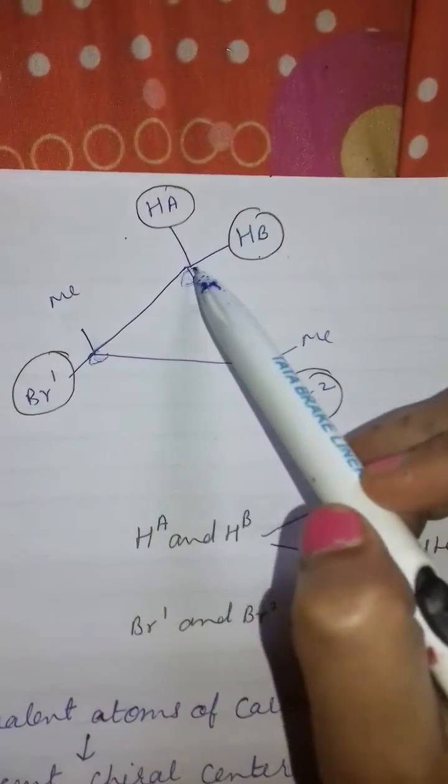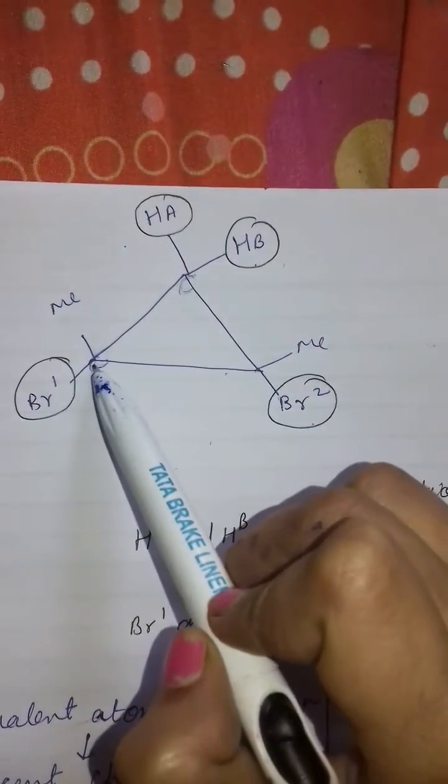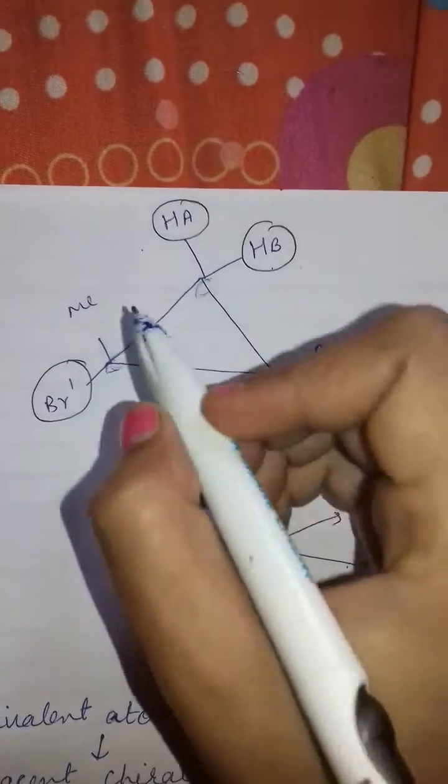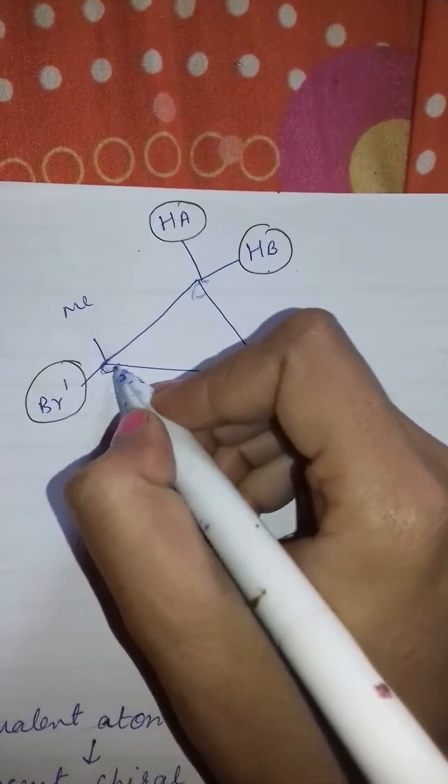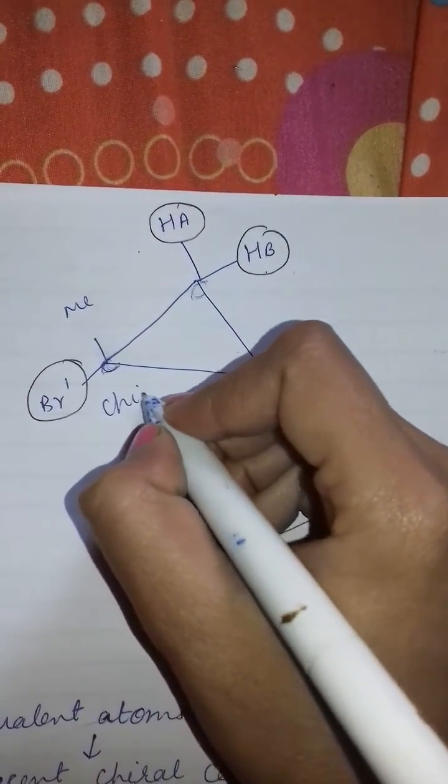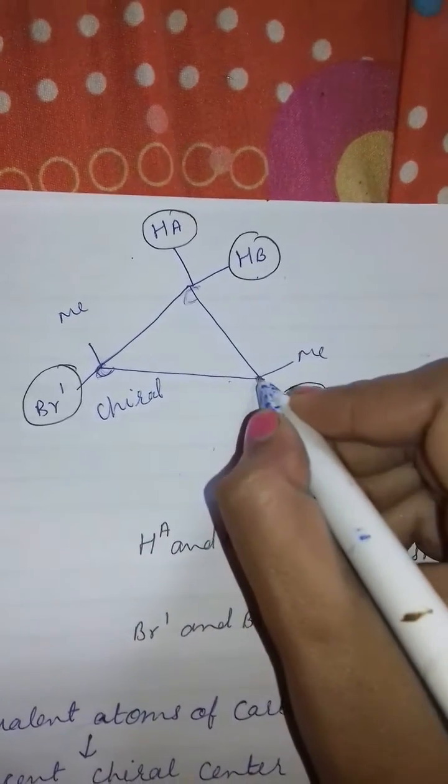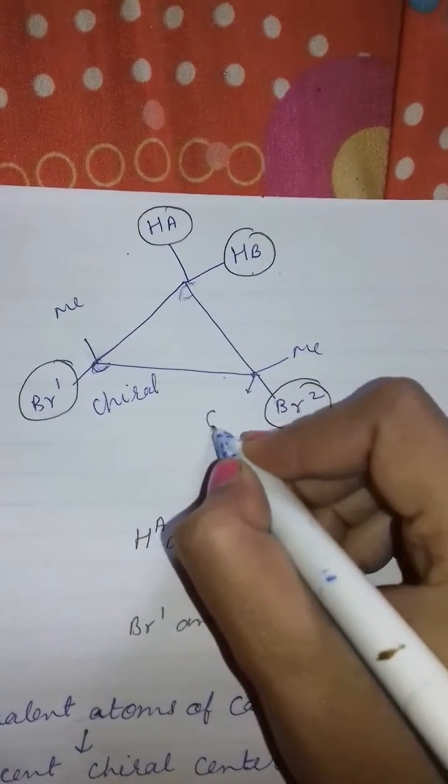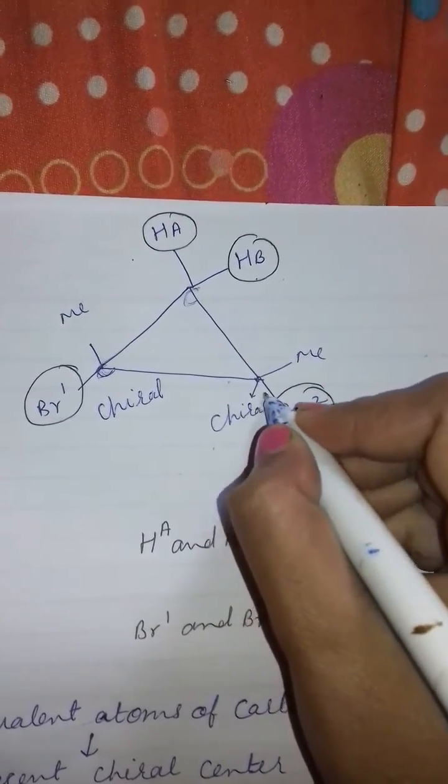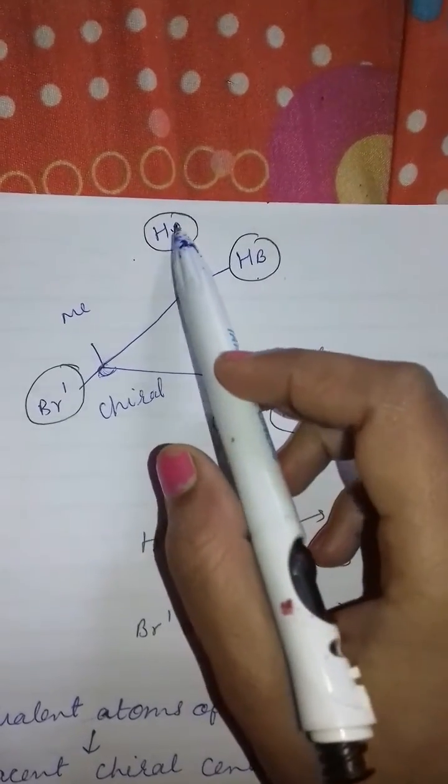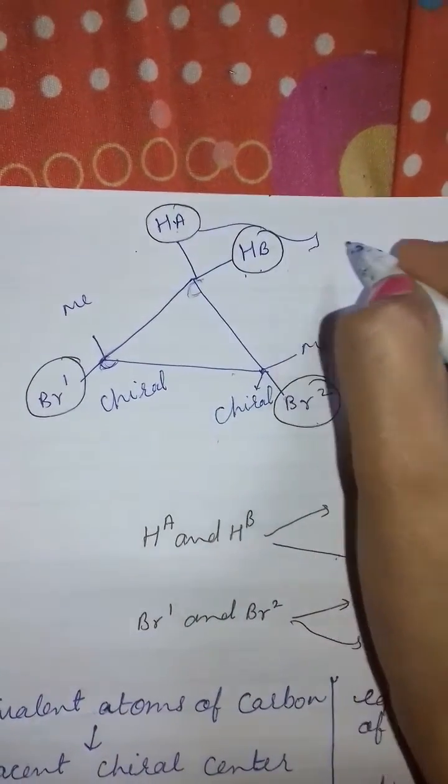Its adjacent carbon is this. And this carbon is chiral. And this carbon is also chiral. So these HA and HB are diastereotopic.